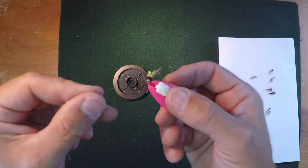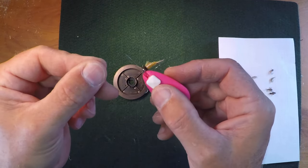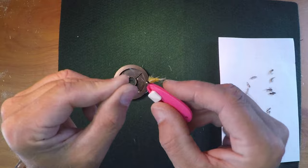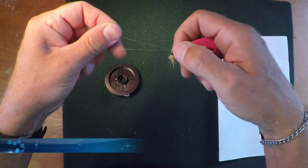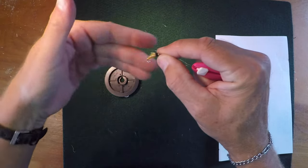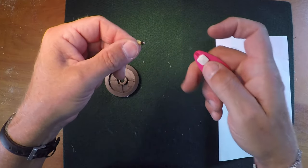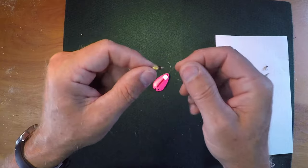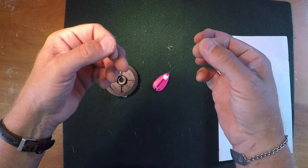Now I take the tippet and put that through the gap, then slide the fly onto the tippet, grab the running end and pull it through. Now I can tie the fly on.